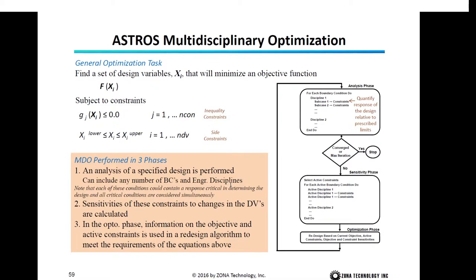The optimization problem can be stated as follows: find a set of design variables that minimize the objective function f, which is a function of x sub i, subject to constraint functions g sub j, where j equals 1 to the number of constraint functions. All constraint functions must be negative. Additionally, an upper bound and lower bound can be imposed on each design variable.